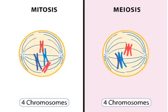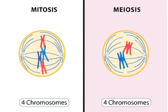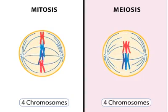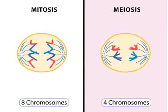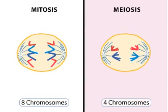Then individual chromosomes line up in mitosis, whereas homologous pairs of chromosomes line up in meiosis. This is a key difference between mitosis and meiosis.